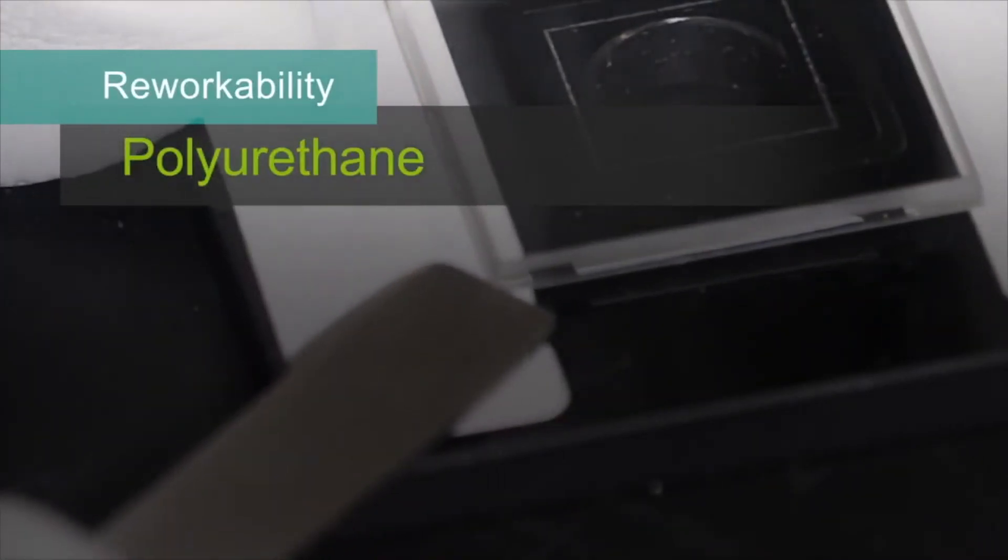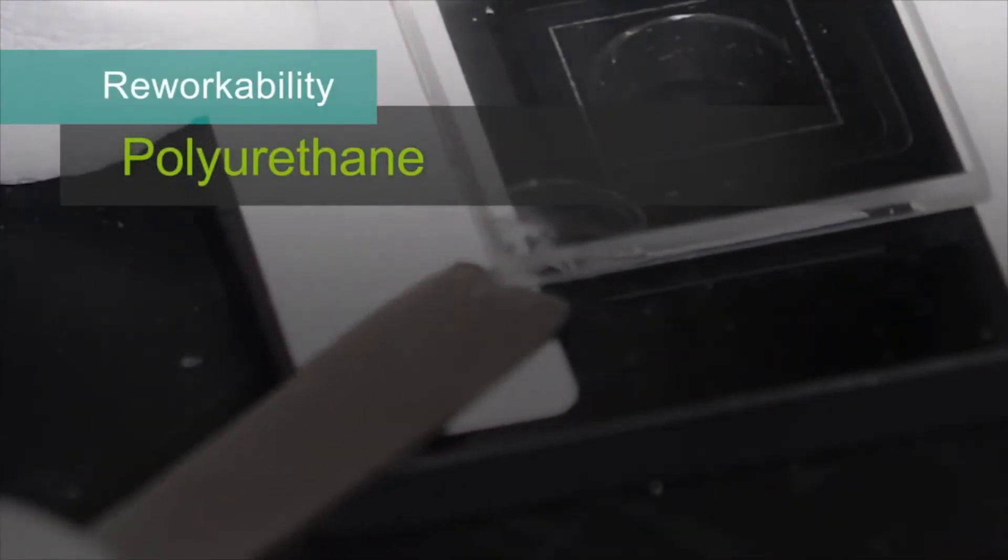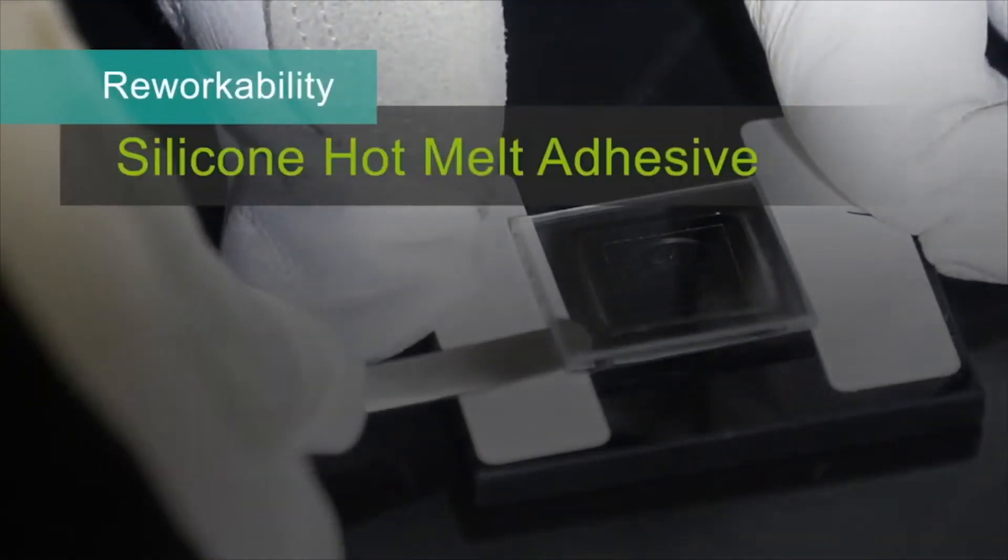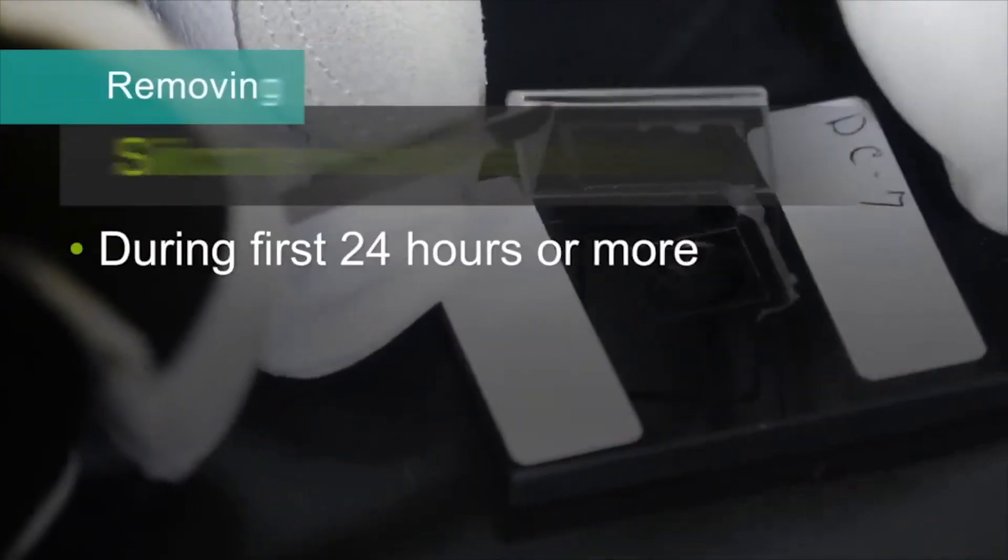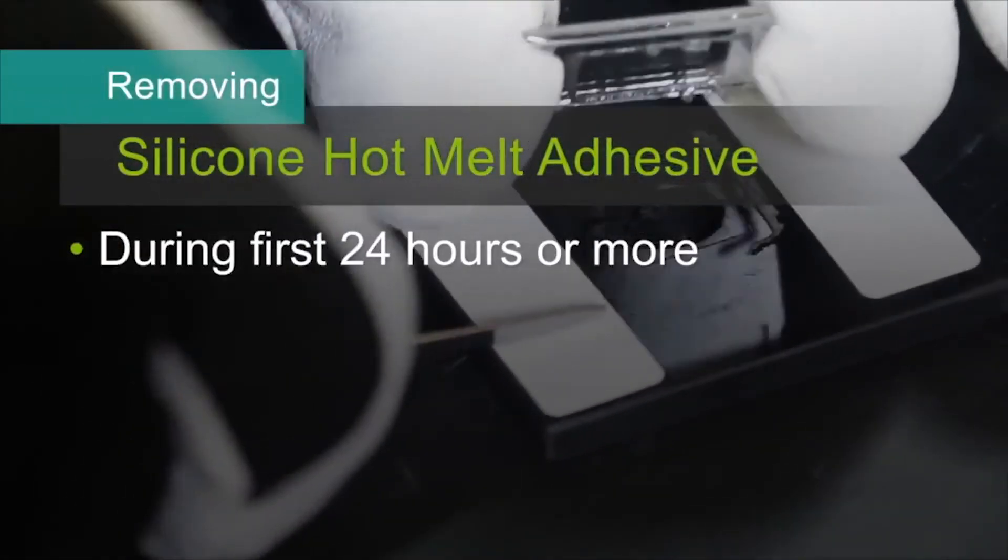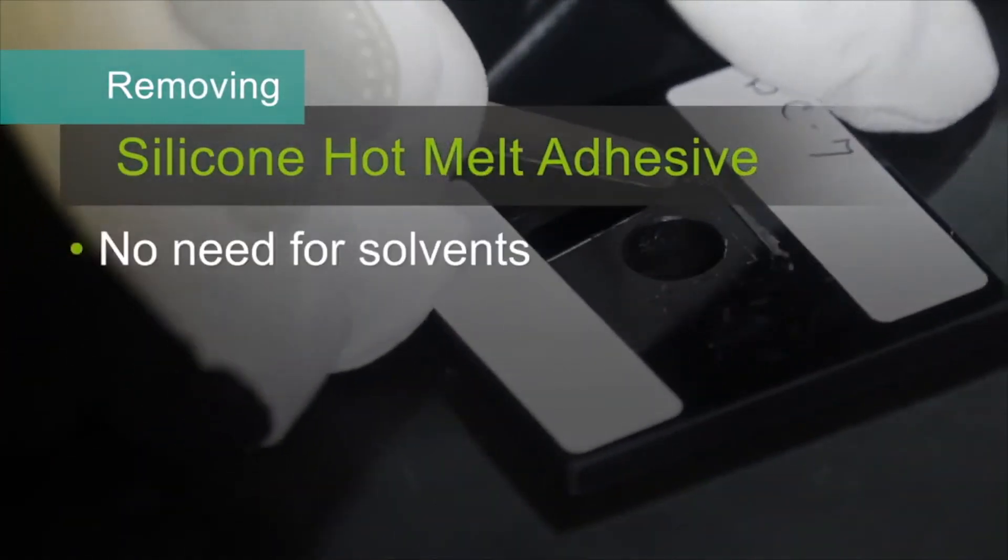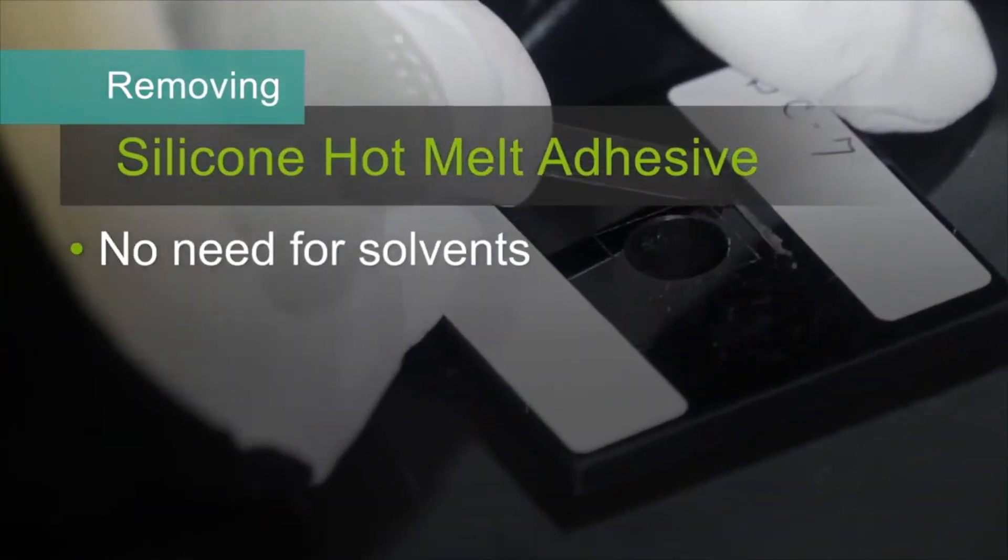Our silicone adhesives can be reworked when needed, unlike polyurethane hot melts where you are likely to break the glass when attempting rework. Because these silicone hot melt adhesives build strength over time, they are reworkable or repairable within 24 hours or more. During this time, they are easily removed without using solvents, allowing internal repair of device components.